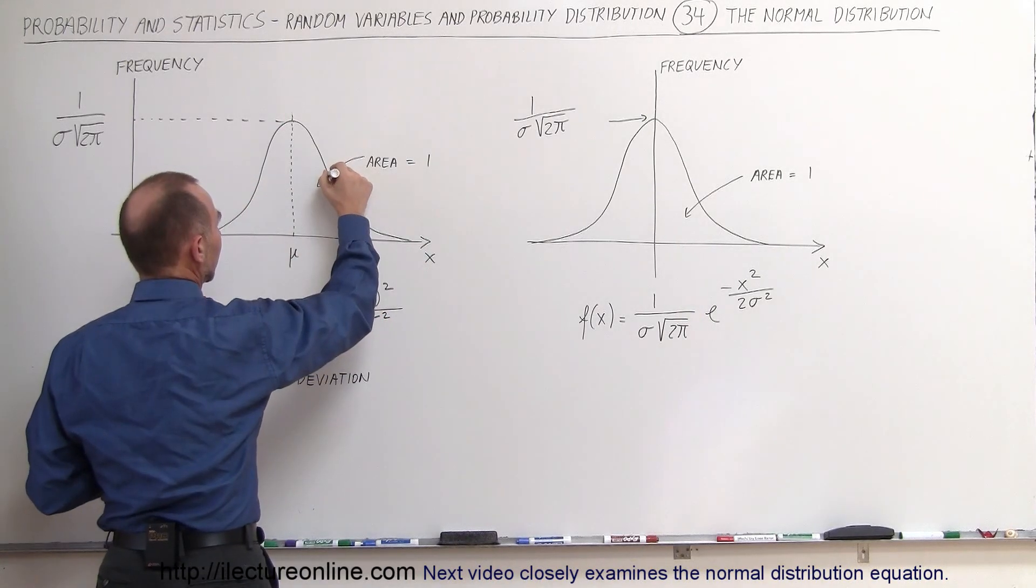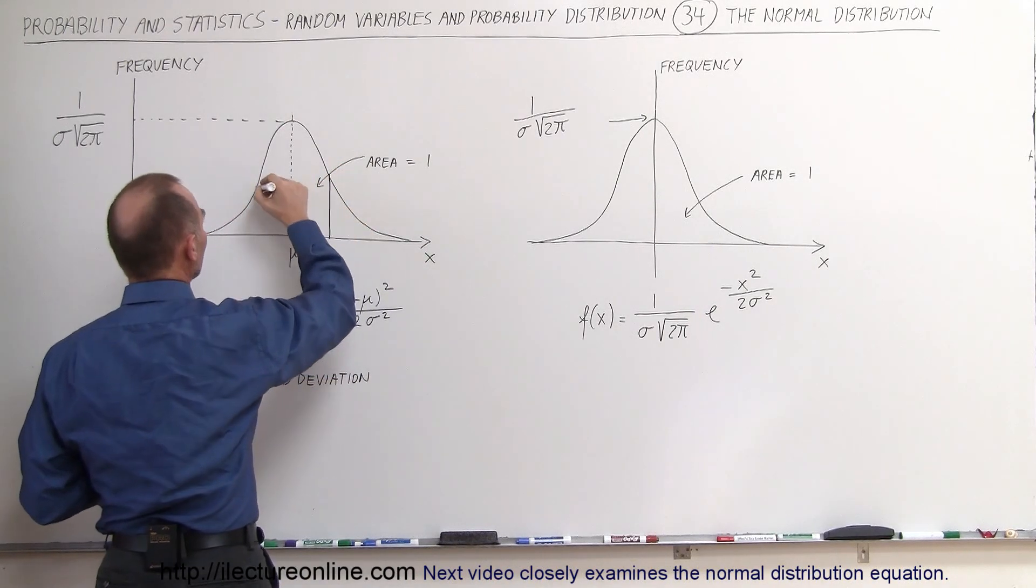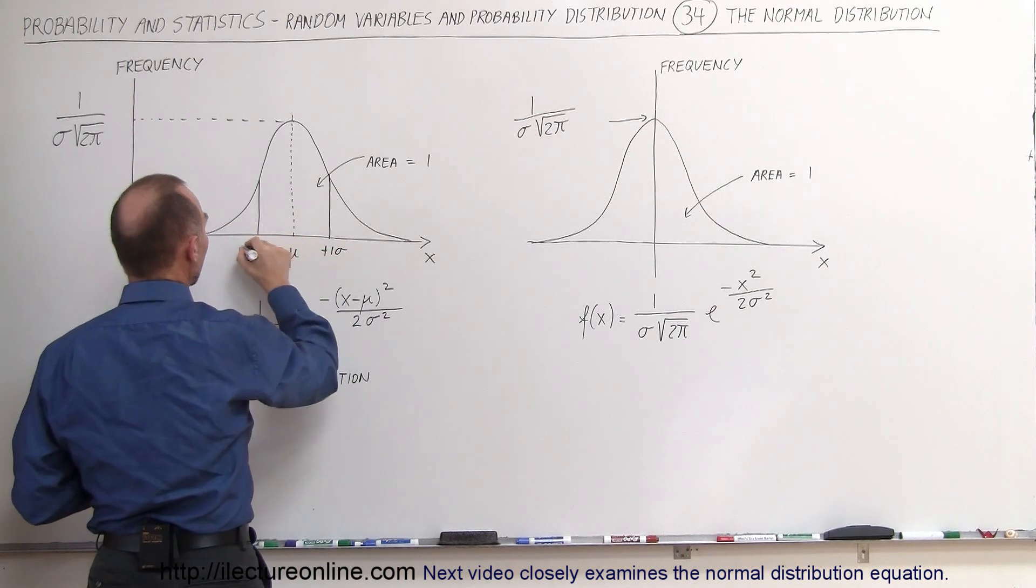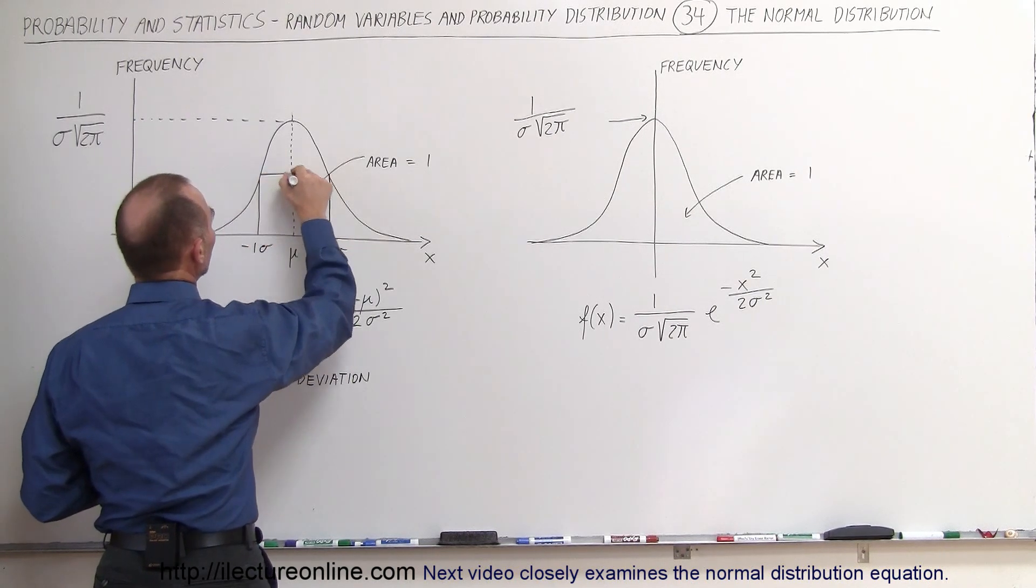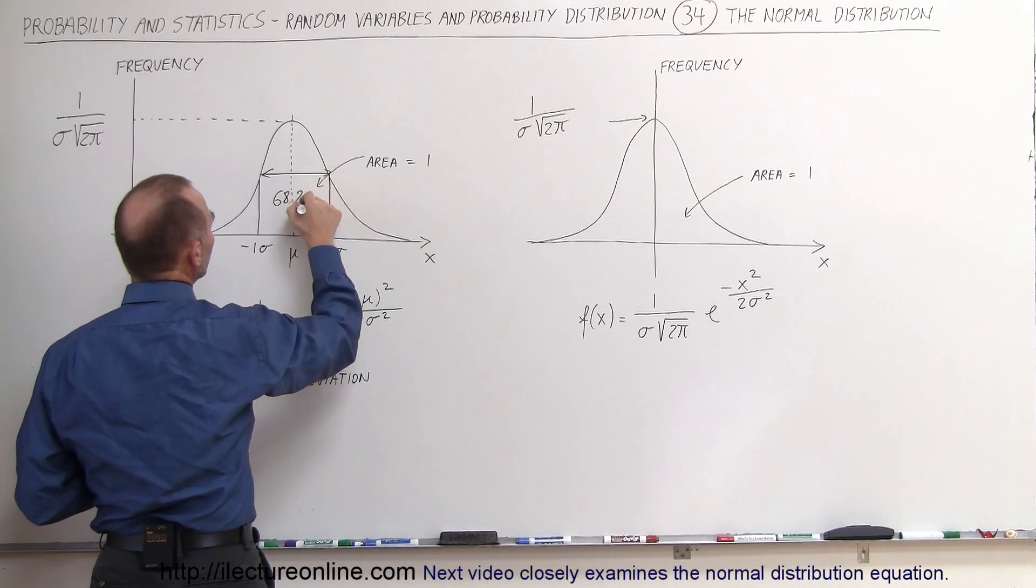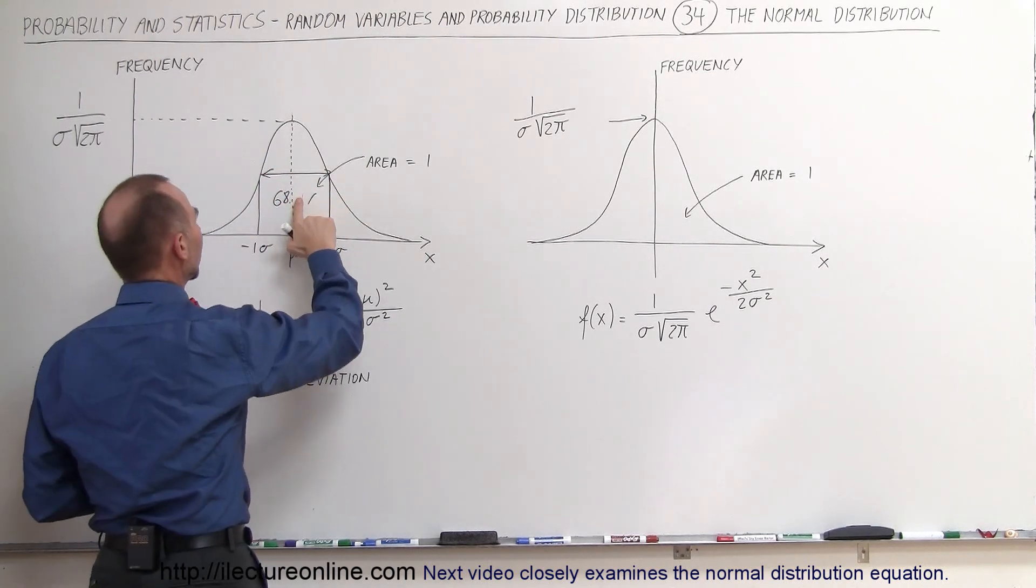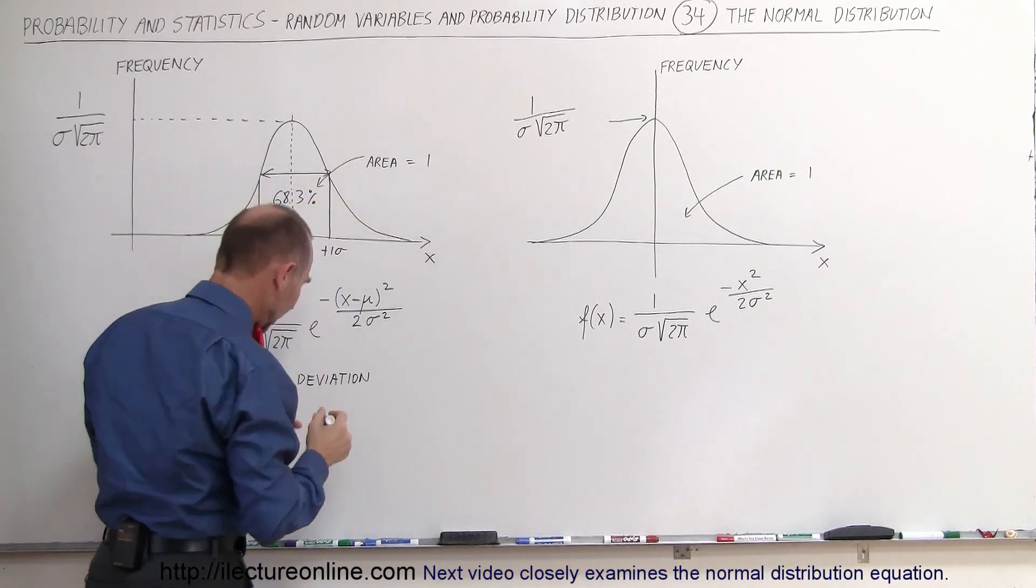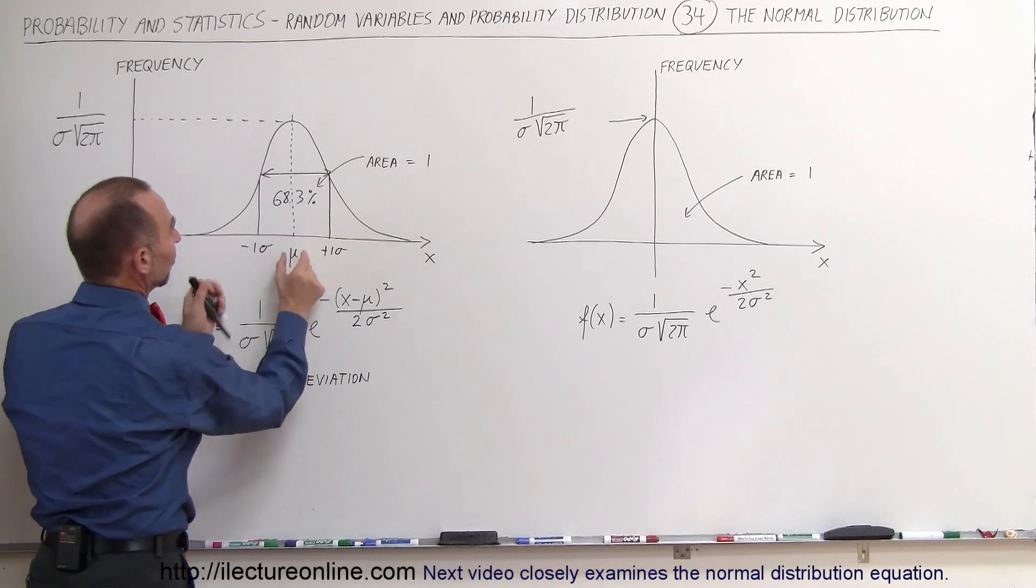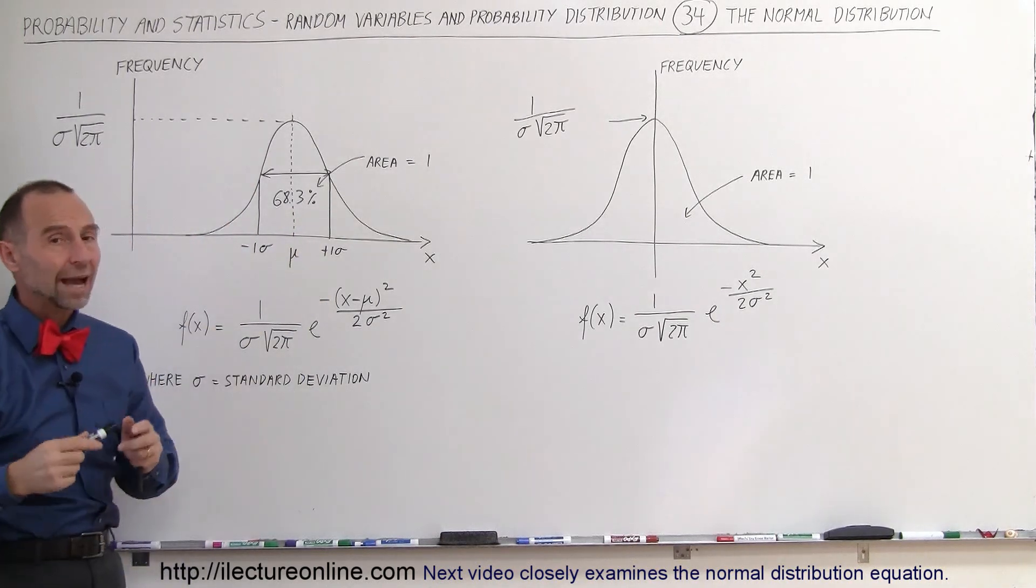What we can look at here is that if we go 1 sigma to the right and to the left, so this is plus 1 sigma and minus 1 sigma, we know that between these two values right here, we have 68.2%, or actually it's more like 68.3%, if we round that off correctly, of all the values underneath the curve fall within plus or minus 1 sigma away from the mean or the average.